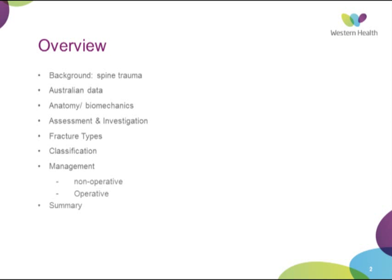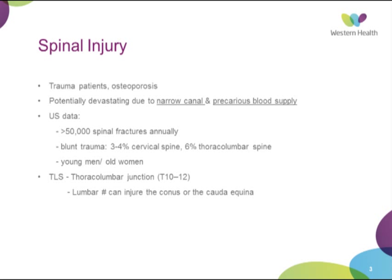In terms of spinal injury, it usually occurs in trauma patients, and there are generally two groups: high energy injuries, or osteoporosis fractures — low energy trauma in older populations. It's potentially devastating, due to the narrow canal at the thoracolumbar spine and the precarious blood supply, particularly in the mid-thoracic spine, which is a watershed area and can lead to cord ischemia.